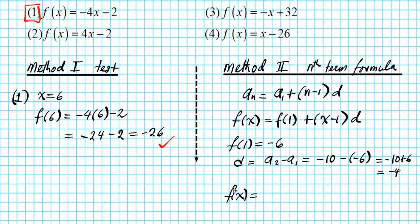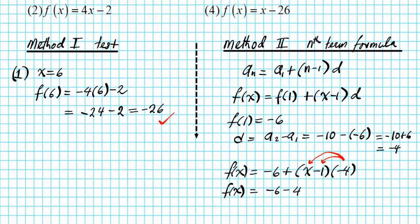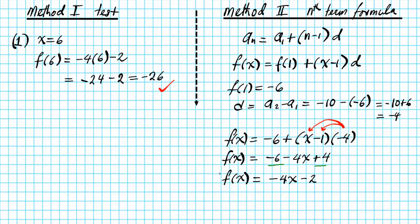We now have the two ingredients to generate the function for this sequence. So f of x is now going to be f1, which is negative 6, plus x minus 1 times the common difference of negative 4. We now simplify that. We have negative 6. Now we're going to distribute negative 4 to the two terms in the parenthesis. So distribute negative 4 to x, and then distribute negative 4 to negative 1. So what does that yield? That gives us negative 4x. Be careful here. Minus times minus is plus plus 4. So combine like terms, f of x equals negative 4x. Negative 6 and positive 4 are like terms, so they unite to give you negative 2.